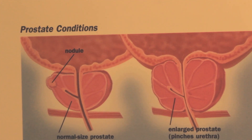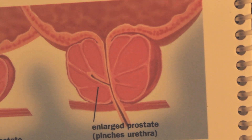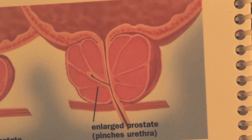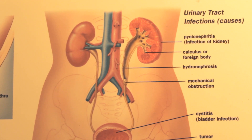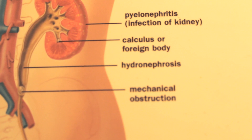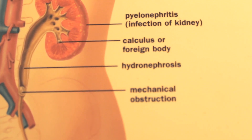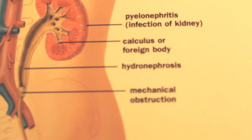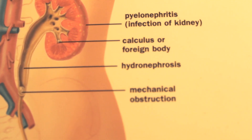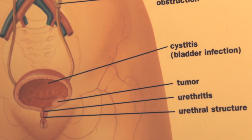When we observe prostate conditions, including cancer, which is common in most men, we see swelling. Any time you have swelling, it's caused by blockage. When we observe a urinary tract infection, it can cause pyelonephritis — pyelo meaning pelvis, nephro meaning kidney, and itis meaning inflammation. So what we have here is inflammation of the renal pelvis due to inflammation of the kidney. A bladder infection is inflammation of the bladder. Urethritis is inflammation of the urethra.